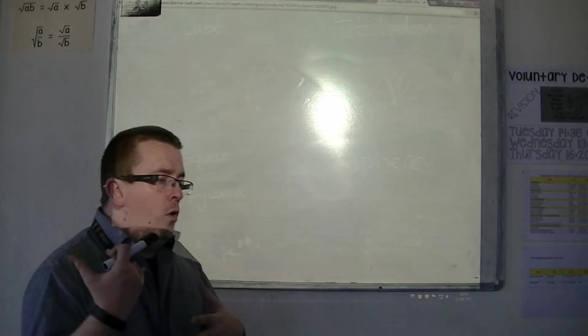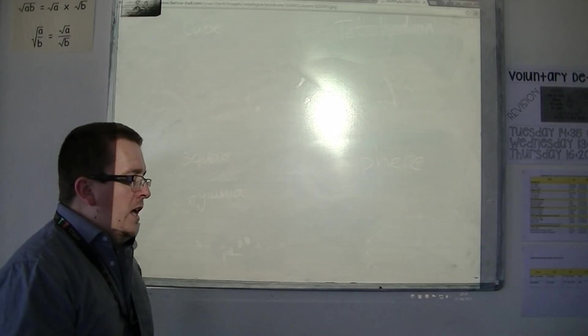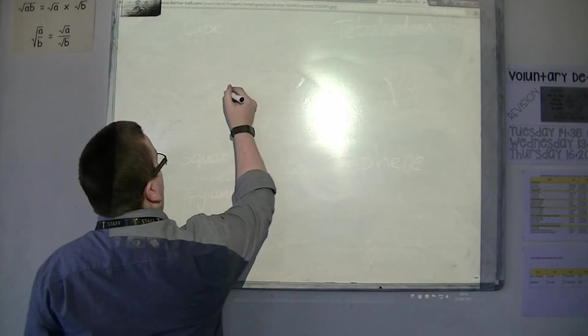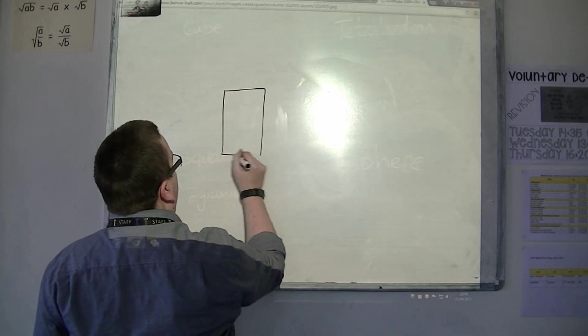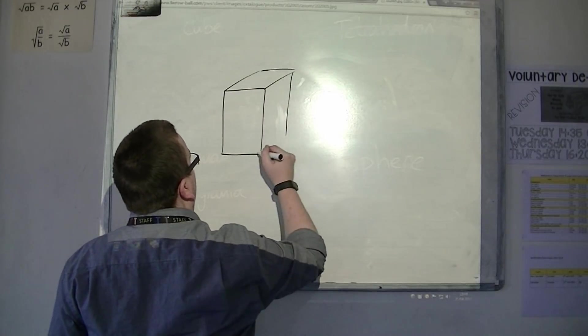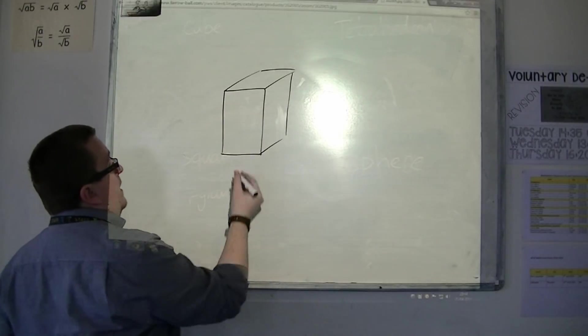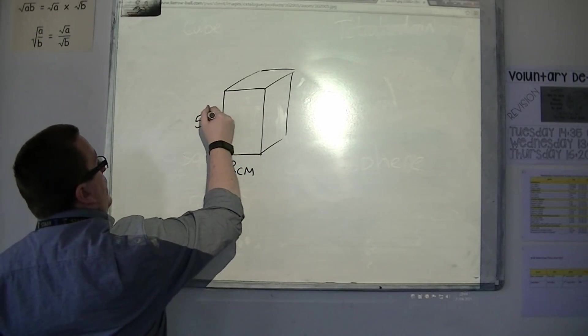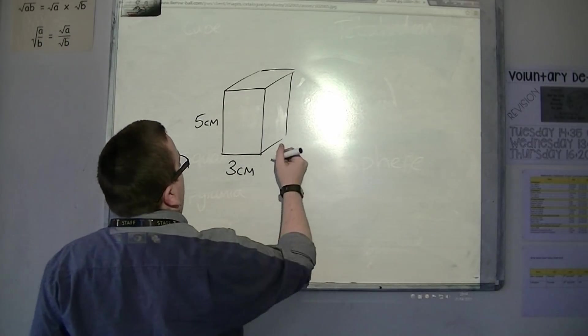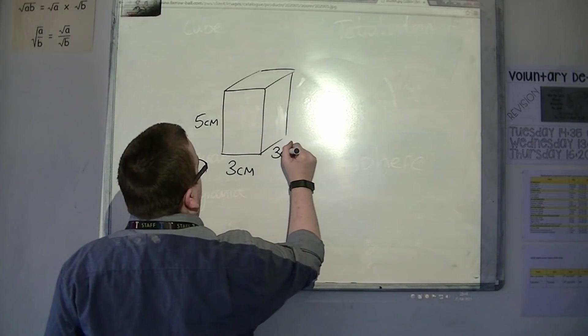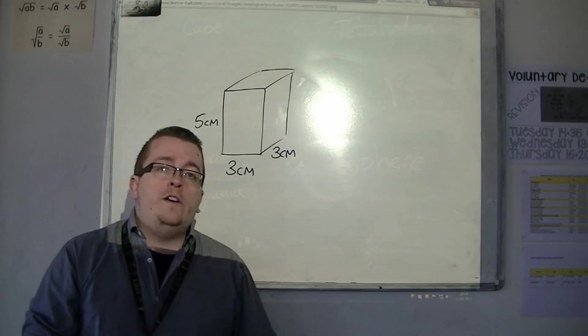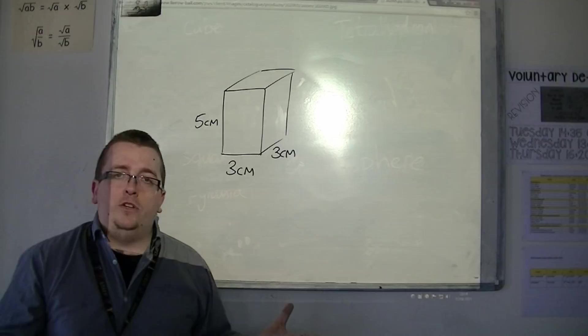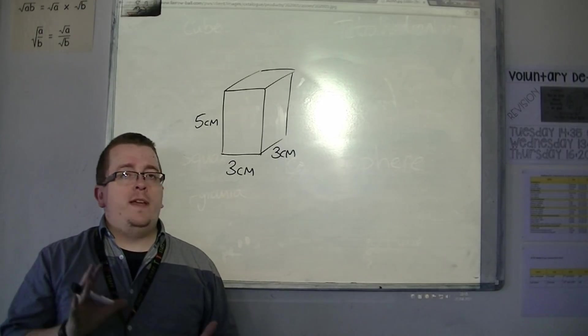So, the whole idea is that if you ask me to draw a cuboid, if I just draw any old cuboid like this, and then say, let's say that that's 3 centimeters, that's 5 centimeters, and that is also 3 centimeters, then although I've drawn a cuboid with those dimensions, I haven't drawn it accurately.